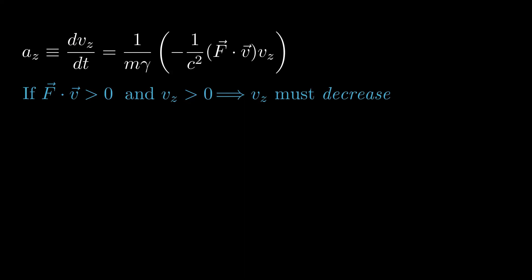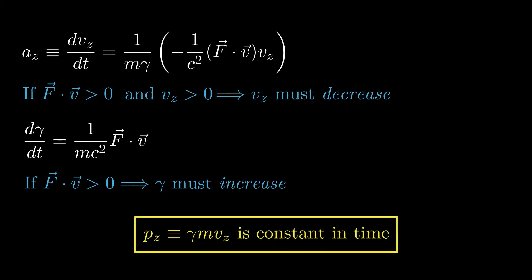As we saw before, the rate of change of gamma is 1 over MC squared times F dot V, so when F dot V is positive, the gamma factor must increase. The net result is that V sub Z decreases as gamma increases, so that the Z component of momentum is constant in time.